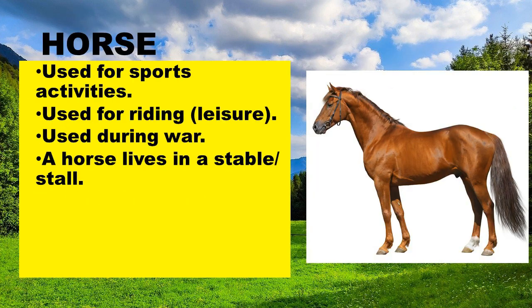Let's look at a horse. A horse is used for transport activities and for riding. It was also used during wars, as horses can pass anywhere. A horse lives in a stable.